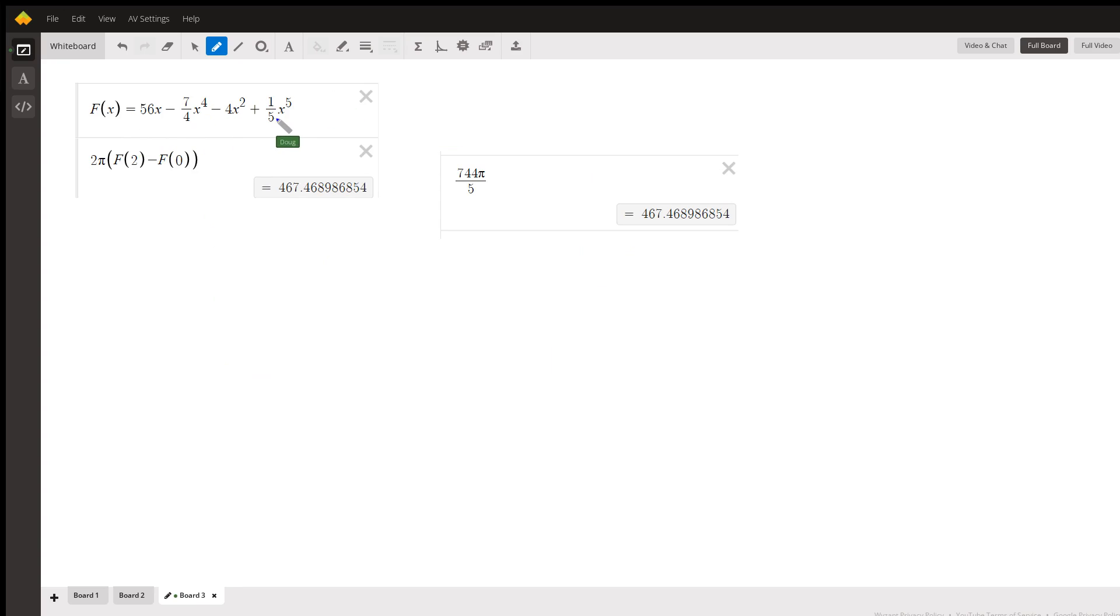Take the antiderivative for each term, and this is kind of what you get. And here's f of 2 minus f of 0 multiplied by 2π, if you actually evaluate this from 0 to 2.